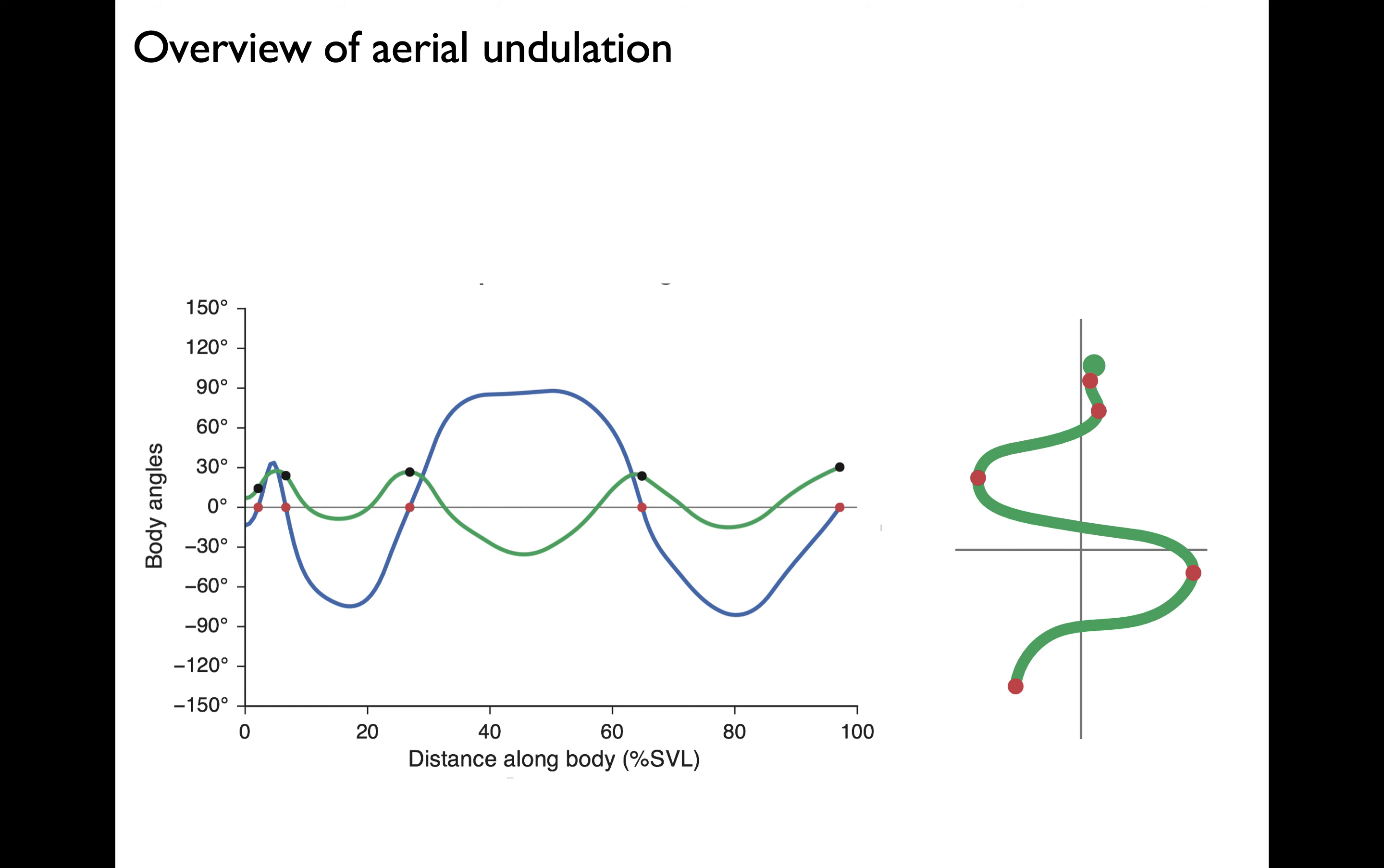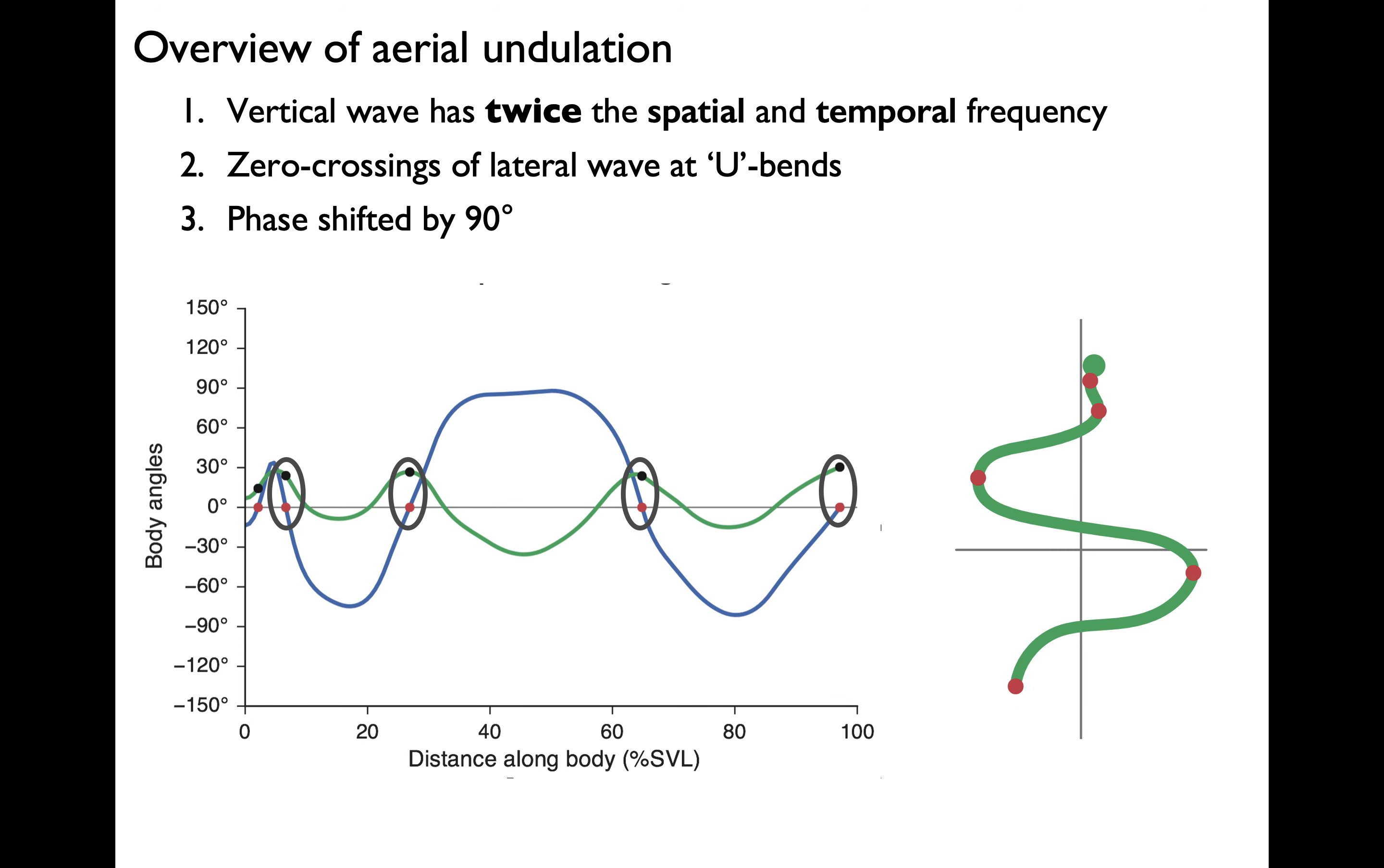Looking at just one time step, we can pull out some key features of aerial undulation. First is that the vertical wave has twice the spatial and temporal frequency as the lateral wave. That is, there are twice as many vertical bends as lateral bends. Second, zero crossings of the lateral wave correspond to the u-bends on the body. Next, these zero crossings are also peaks and maxima of the vertical wave. This indicates that the two waves are phase-shifted by 90 degrees, and that the maximum out-of-plane bending occurs at the u-bends.